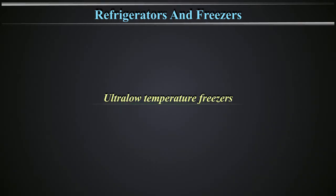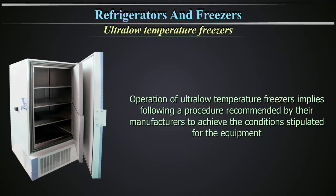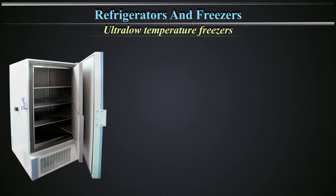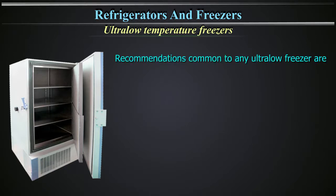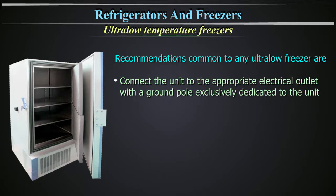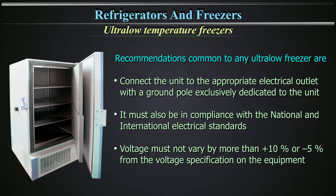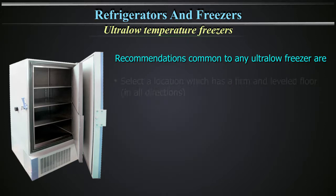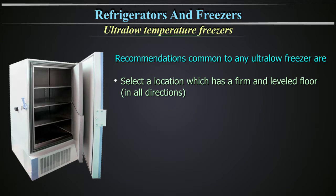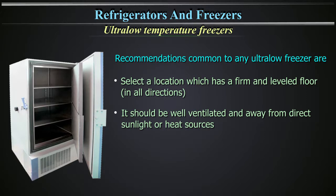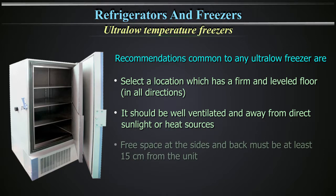Operation of ultra-low temperature freezers implies following a procedure recommended by their manufacturers. The recommendations common to any ultra-low freezer are: 1. Connect the unit to the appropriate electrical outlet with a ground pole exclusively dedicated to the unit, in compliance with national and international electrical standards. The voltage must not vary by more than plus 10% or minus 5% from the voltage specification on the equipment. Select a location which has a firm and leveled ground in all directions. It should be well ventilated and away from direct sunlight or heat sources. The free space at the sides and back must be at least 15 cm from the unit.